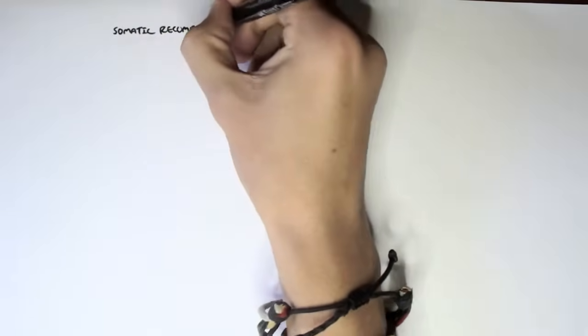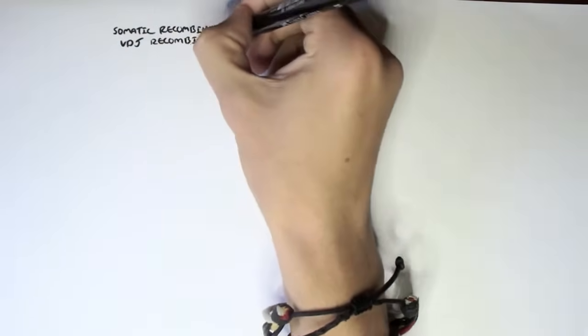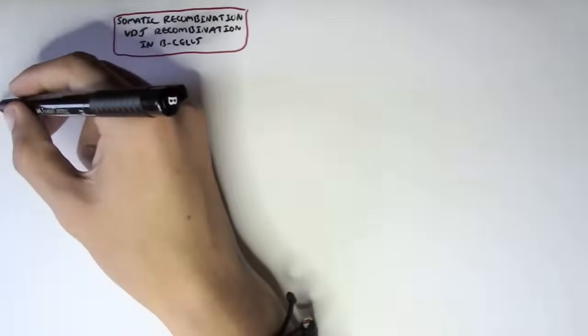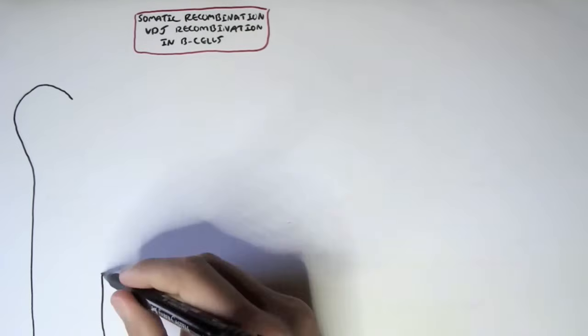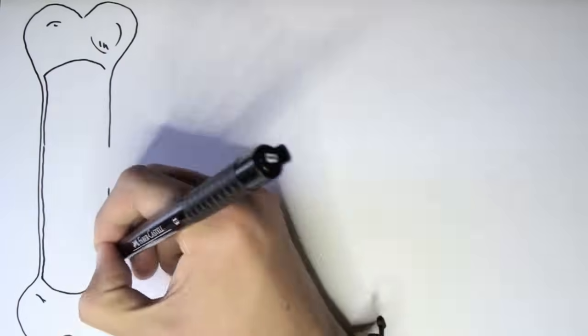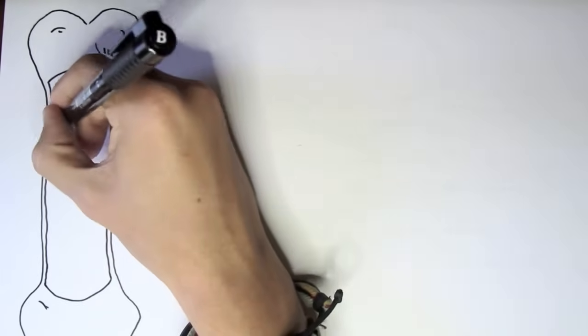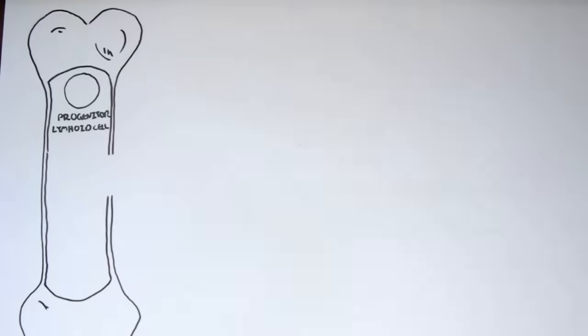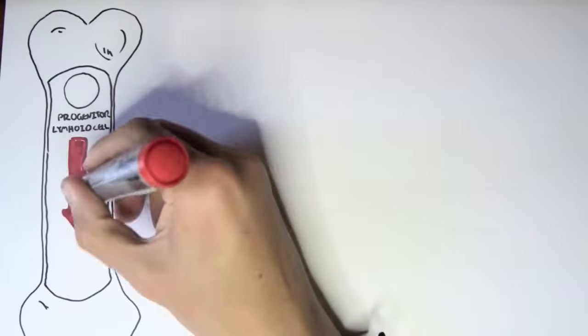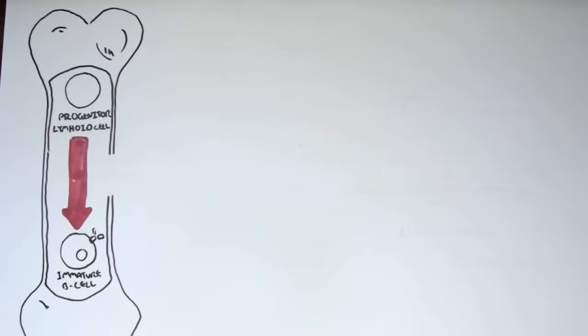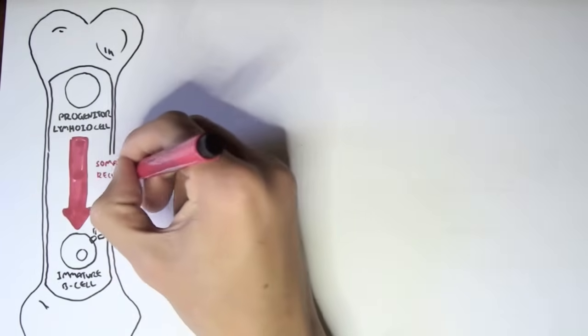And in this video we're going to talk about antibody somatic VDJ or VDJ recombination. And this is going to be part one. Antibody somatic recombination occurs in B cells. Going back to B cell development, we begin with a progenitor lymphoid cell which through somatic recombination, also known as VDJ recombination, will make an immature B cell with a unique antibody that binds to a specific antigen.